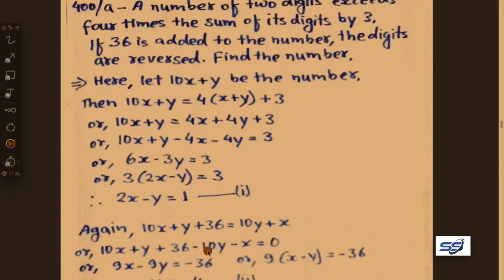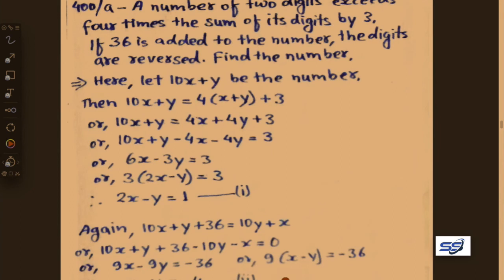Rearranging: 10x plus y plus 36 minus 10y minus x equals 0. So 9x minus 9y equals minus 36. Taking 9 as common: x minus y equals minus 4. Let this be equation 2.